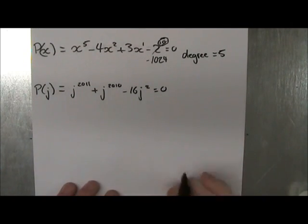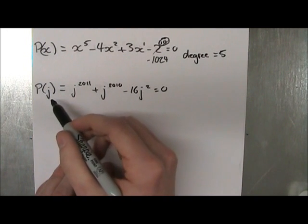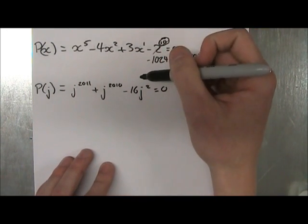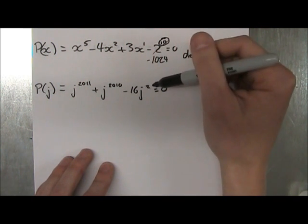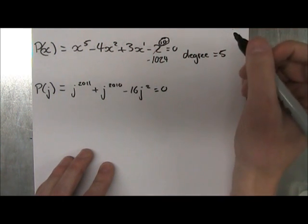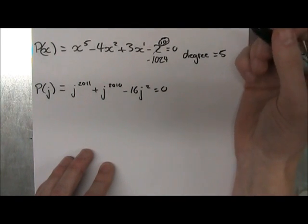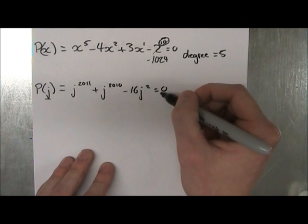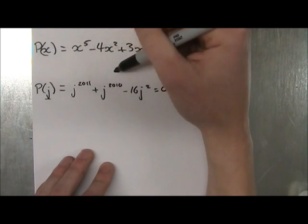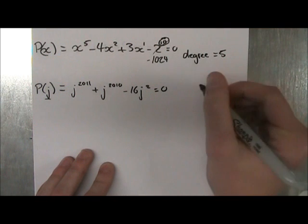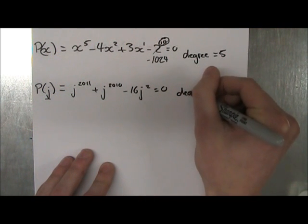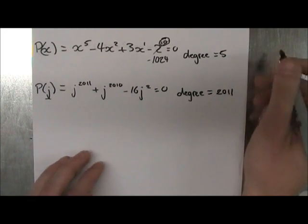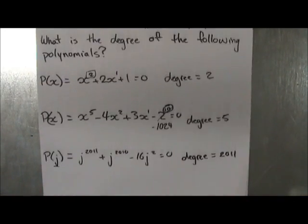And our last question, we have p of j is equal to j to the 2011 plus j to the 2010 minus 16j squared is equal to 0. So again, we look for the highest power on our variable, and in this case it's j. And we only have j's, so it doesn't matter. And the highest power we see is 2011. So the degree, although this question is a bit exaggerated, it is 2011. Okay, let's move on to some other questions.